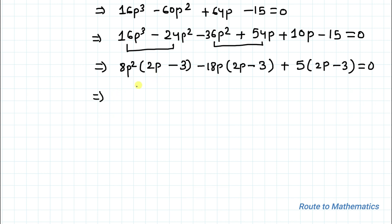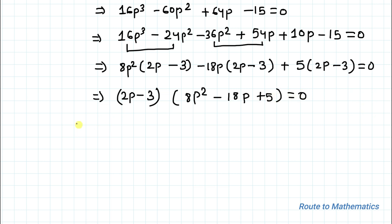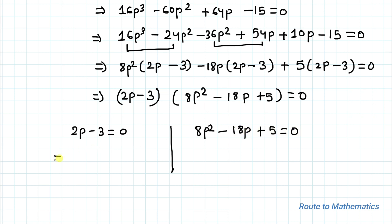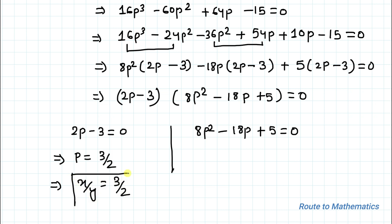Taking (2p - 3) common, we get (2p - 3)(8p² - 18p + 5) equals to 0. From the first factor, 2p - 3 = 0, which gives p = 3/2. This implies x by y equals 3 by 2 is one of the solutions.